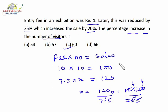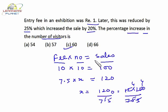The most important part is to find out this relationship: fee into number of visitors equals total amount received, that is revenue or sales.